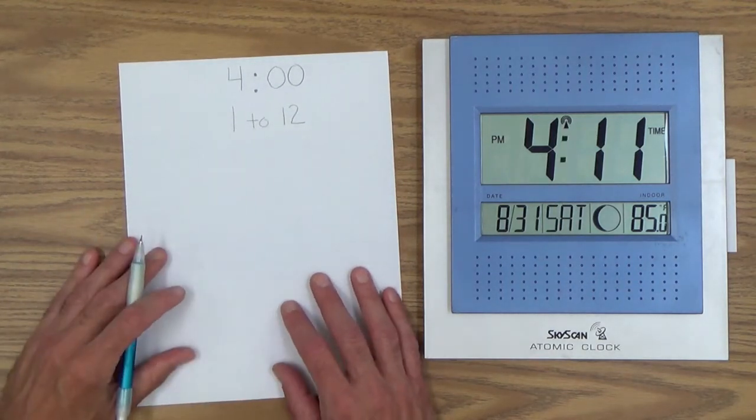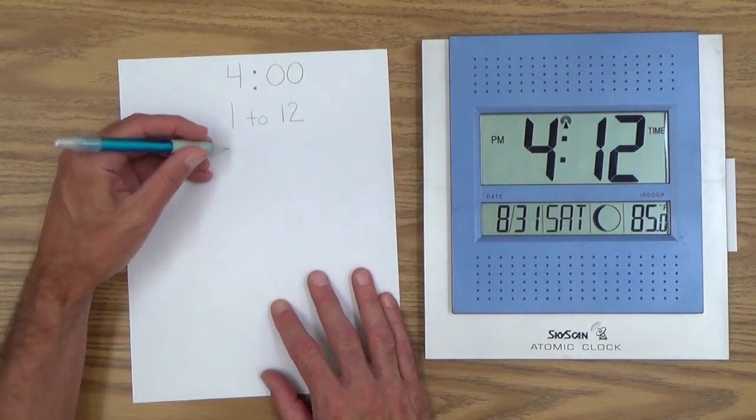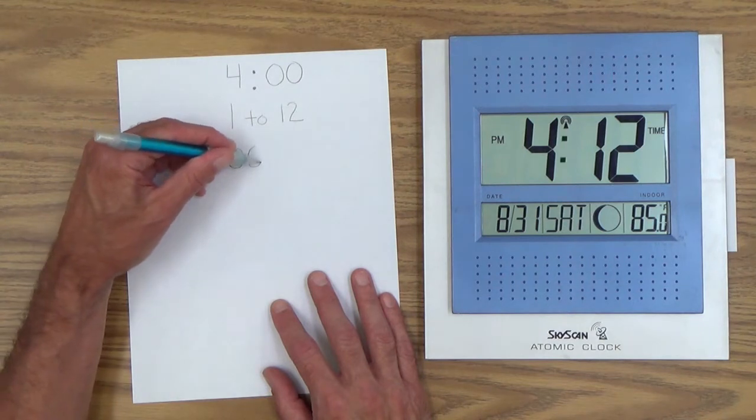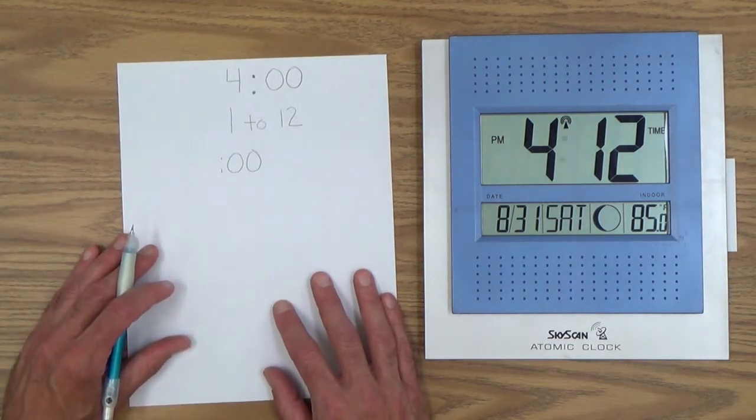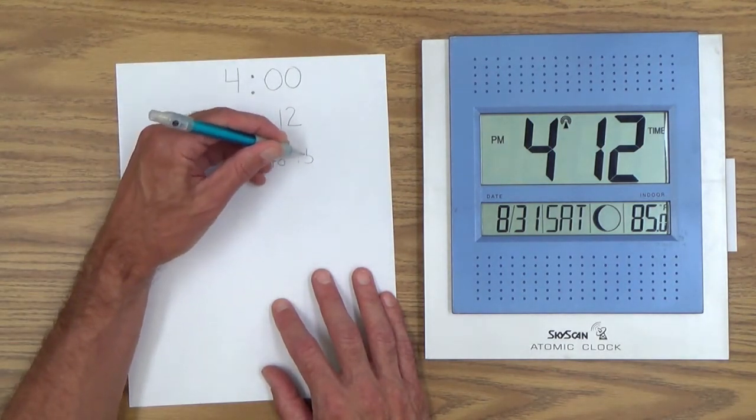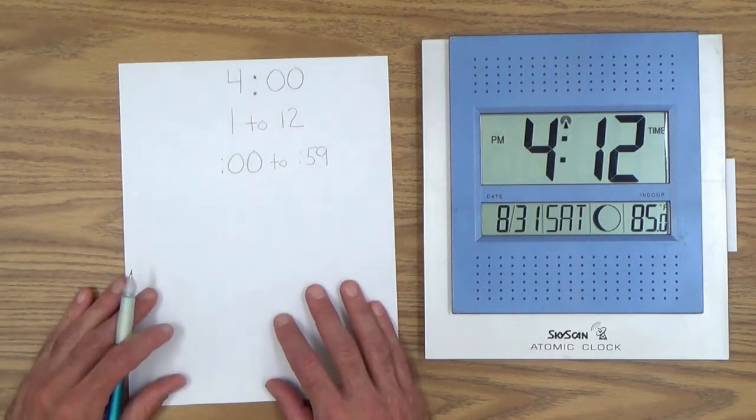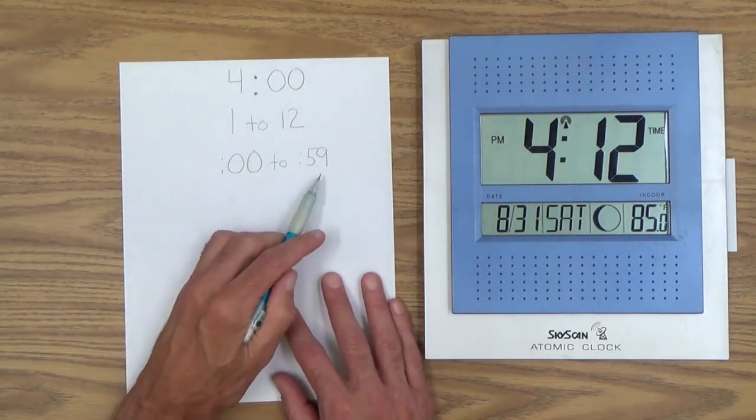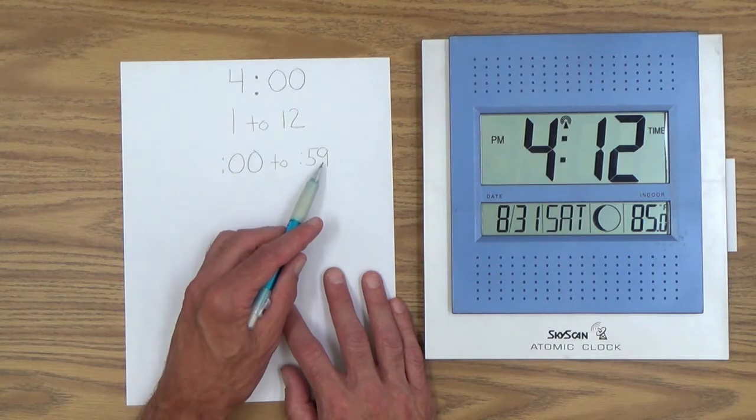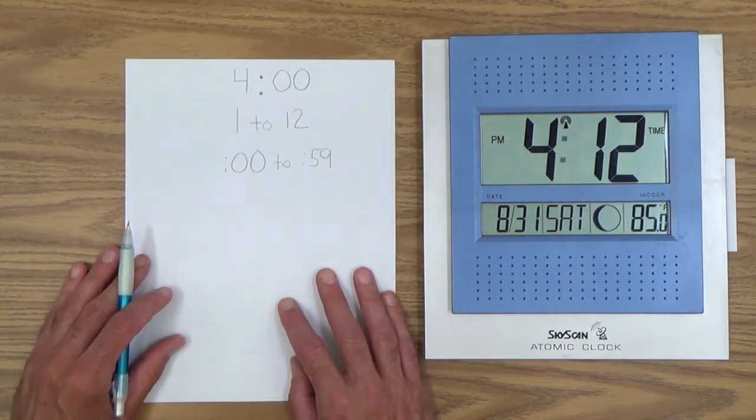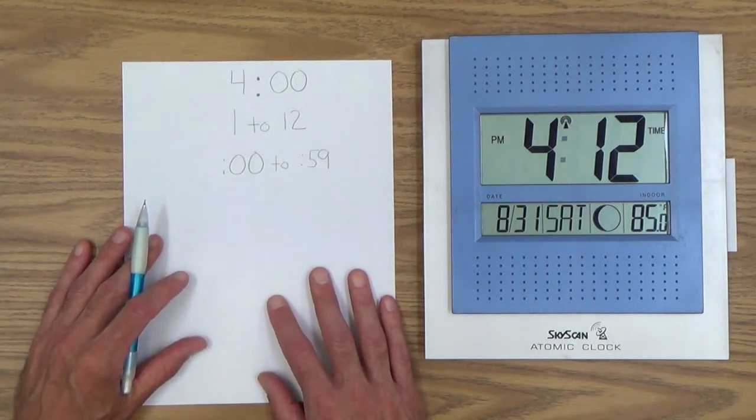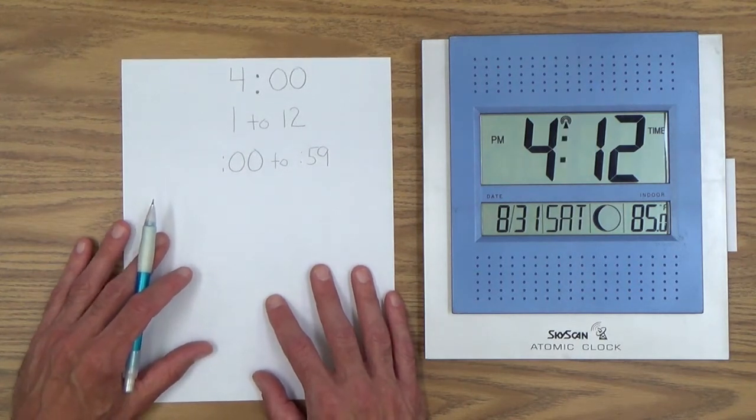Minutes can go anywhere from, we already talked about this, zero zero minutes. That's no minutes. That's on the hour, the o'clock. And they can go all the way to 59. And of course, there are 60 minutes in an hour. The reason why you never make it to 60 is because when you go to 59 and when you hit 60, the cycle starts over again. So you never have a 4-60. You could have a 4-59. And once again, a very difficult concept for a child to understand.